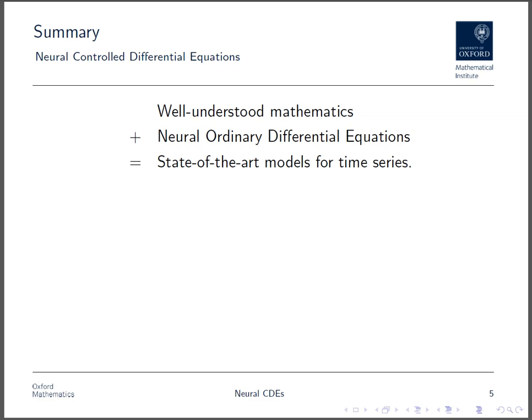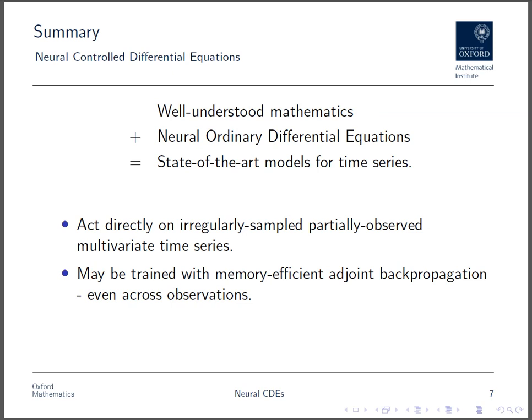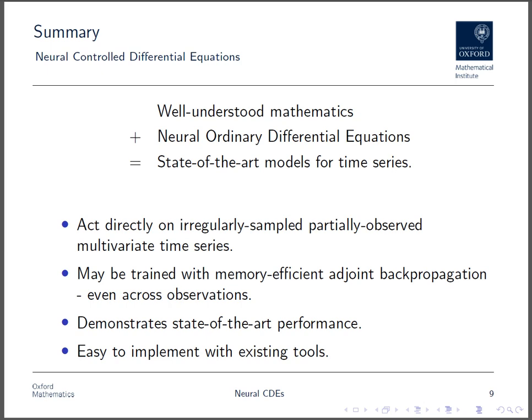Its key advantages are that it acts directly on time series, even in the general case of irregularly sampled, partially observed multivariate data. It may be trained with adjoint backpropagation, which is particularly memory efficient. It demonstrates state-of-the-art performance, and it's easy to implement with existing tools.